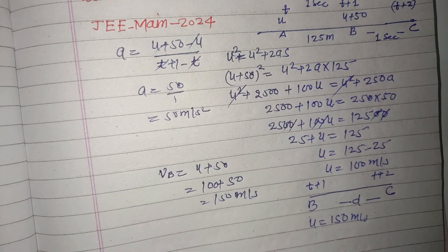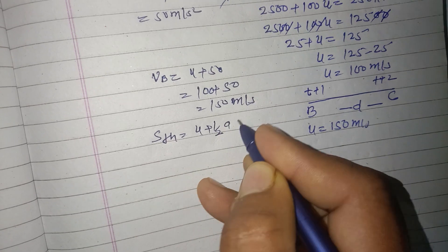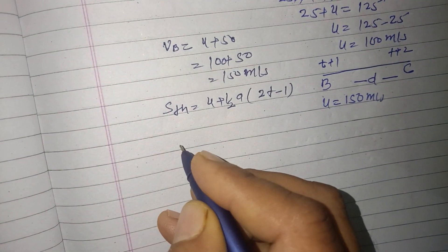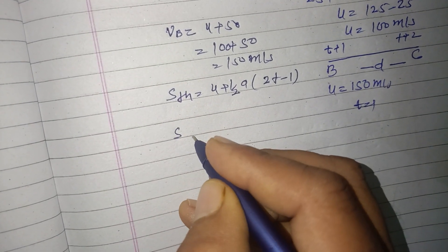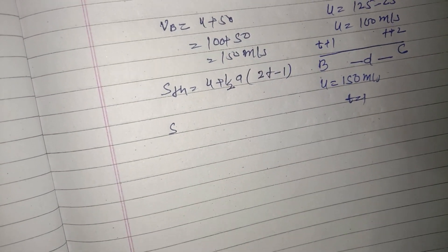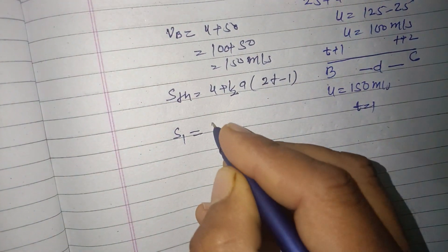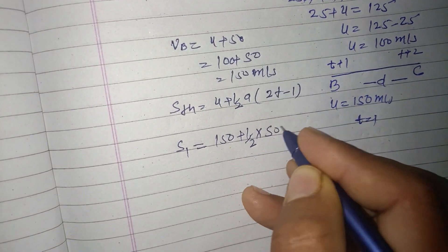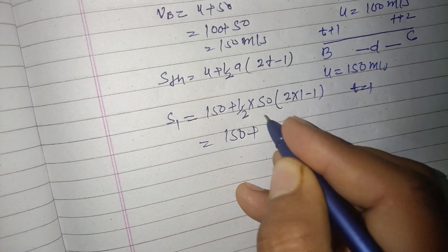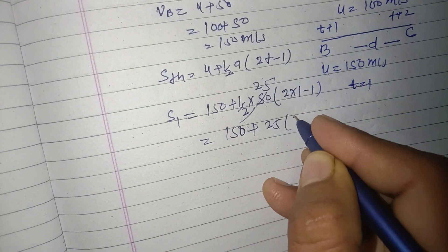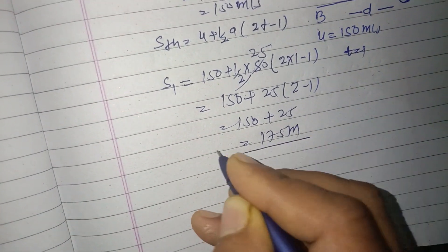The distance covered in this section using Sₙ = u + (a/2)(2n - 1). Here time is one second, so n is 1. Putting u = 150 plus half of a, which is 50, into 2 × 1 - 1, so 150 + 25 × (2 - 1) = 150 + 25 = 175 meters.